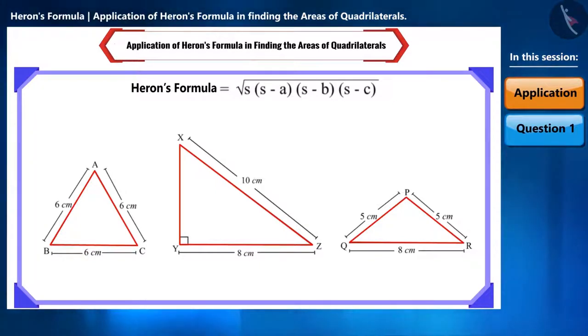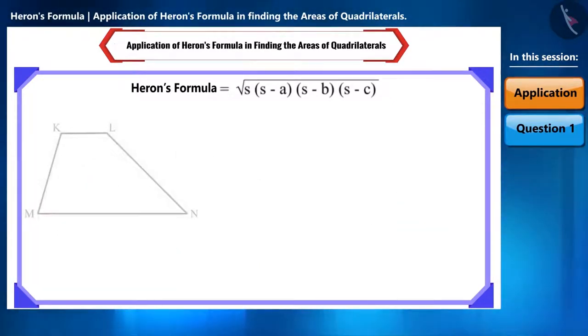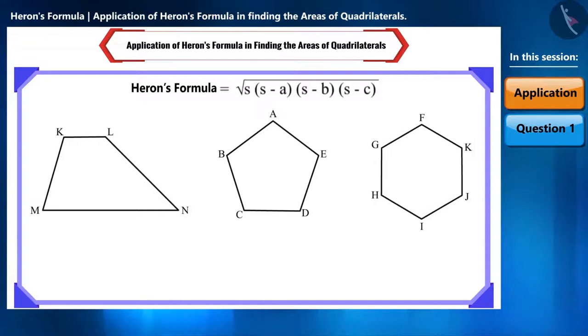But can we use it to find the area of other polygons? Can these polygons be divided into triangles? Yes. If we draw a diagonal in a quadrilateral, then we will get two triangles.